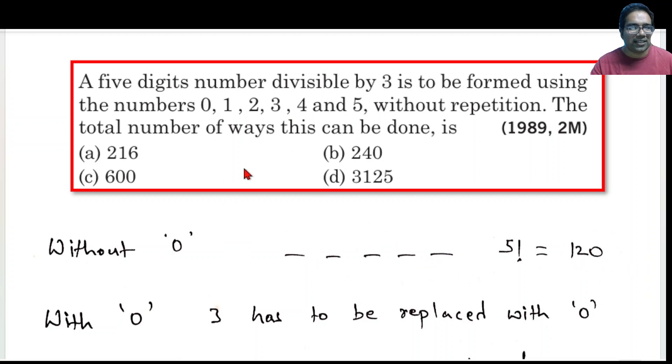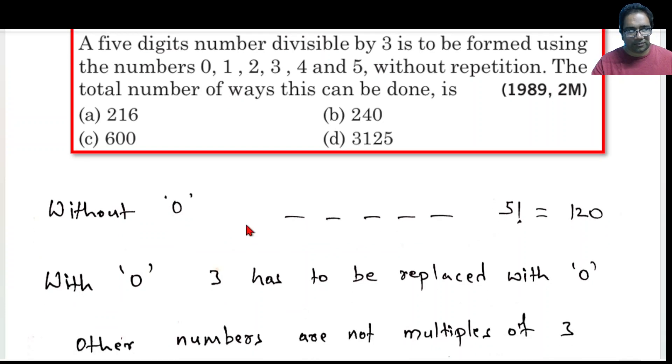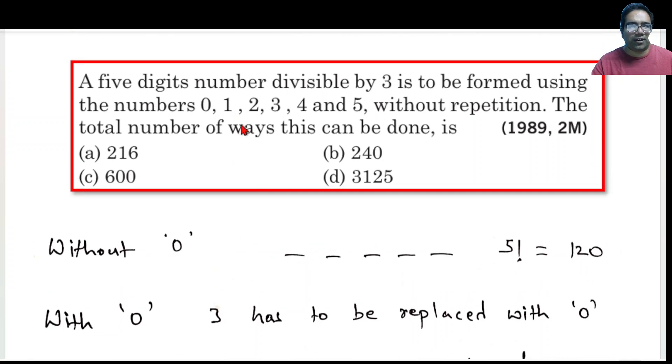Now let us say we have to include 0. If we have to include 0, then which number can we remove? See, we cannot remove 1, 2, 4 or 5 because they are not multiples of 3.